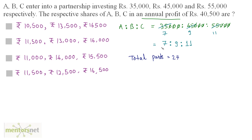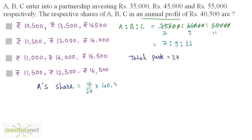A gets 7 parts out of 27, B gets 9 parts out of 27, and C gets 11 parts out of 27 of the profit. Now we can calculate the shares in the annual profit of 40,500. A's share is equal to 7 out of 27 parts of 40,500, so 7 by 27 times 40,500, which equals 10,500.